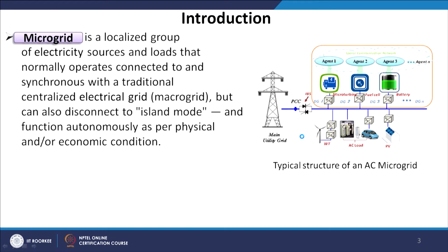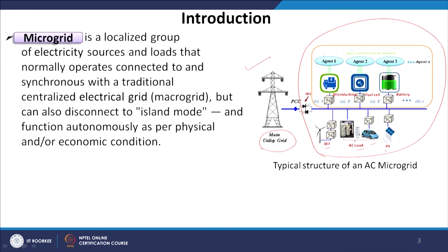Let us consider a typical AC microgrid architecture. We can see that the main utility grid exists in the system, and this is our proposed microgrid. We can clearly see there are wind turbines, loads, electric vehicles, and PV connected to the bus. Further, we have other types of sources including micro turbines, fuel cells, and batteries. The AC bus is directly connected to the utility grid, which is also AC in nature.